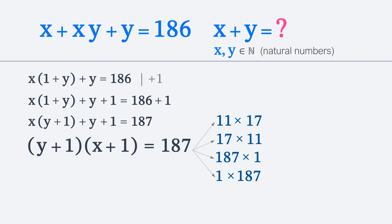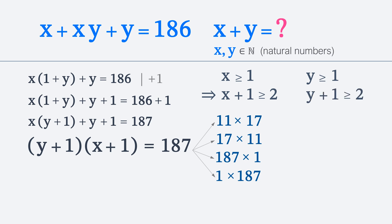We know that x and y are natural numbers. This means that each of them is greater than or equal to 1. Therefore, x plus 1 is greater than or equal to 2, and y plus 1 is also greater than or equal to 2. This means that we cannot have the last two options, since none of the values in the parentheses can be equal to 1. Therefore, the third option, 187 times 1, and the fourth option, 1 times 187, are impossible.